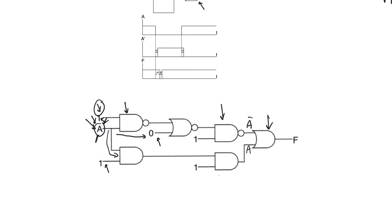For the value of A to propagate when A makes a transition — and it's important to recall that even though we are talking about a static hazard, it only happens when there is a transition in a certain variable — for that transition to propagate through the first NAND gate, this variable has to be one. For A-bar to propagate through this NOR gate, this input has to be zero. So for OR gates and NOR gates, the other variables have to be zeros, and for NAND and AND gates, the values have to be ones to allow propagation.